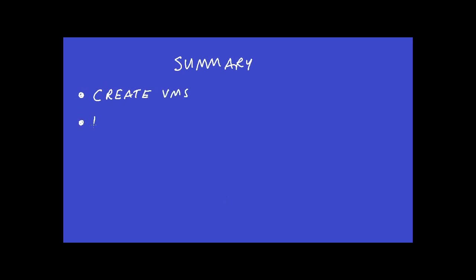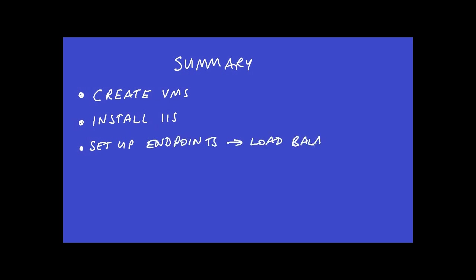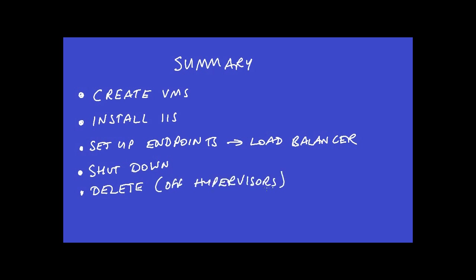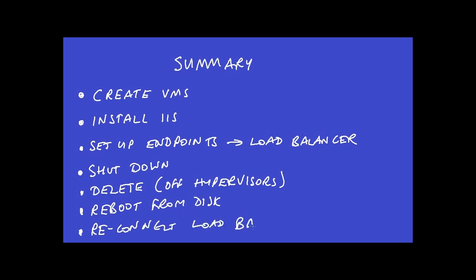1. We created the VMs. 2. We installed IIS onto the VMs. 3. We set up the endpoints to connect to the load balancer. 4. We shut down the VMs. 5. We deleted the VMs off the hypervisor to ensure we didn't rack up any charges. 6. We then rebooted from the disks, which were saved in blob storage. 7. We finally reconnected the load balancer. Because the last couple of steps took such a short time, we can perform them any time we need this very simple pop-up lab.